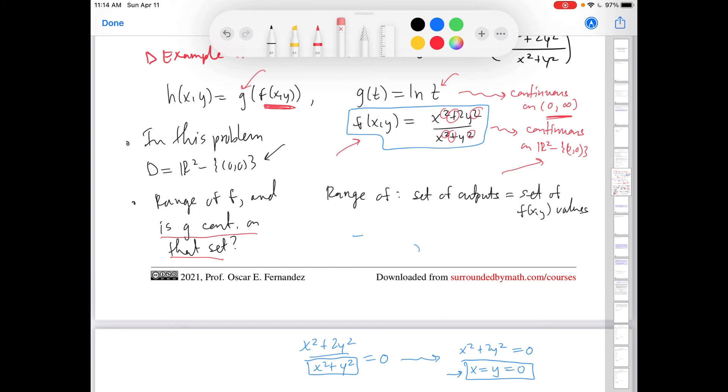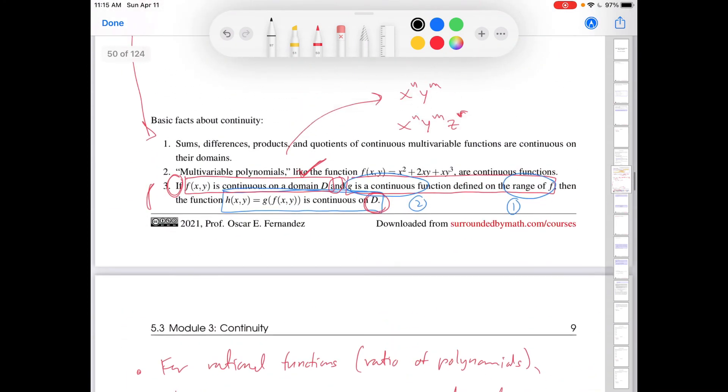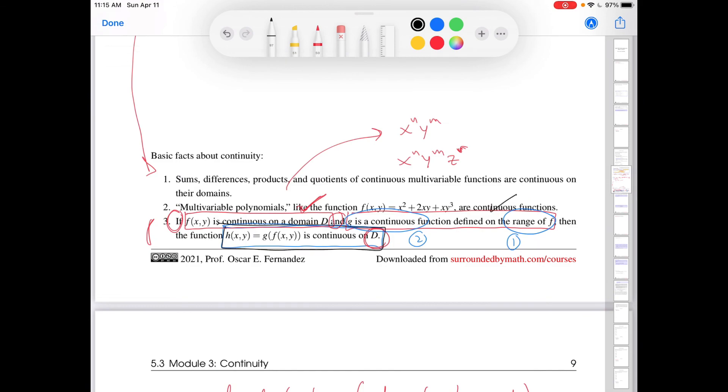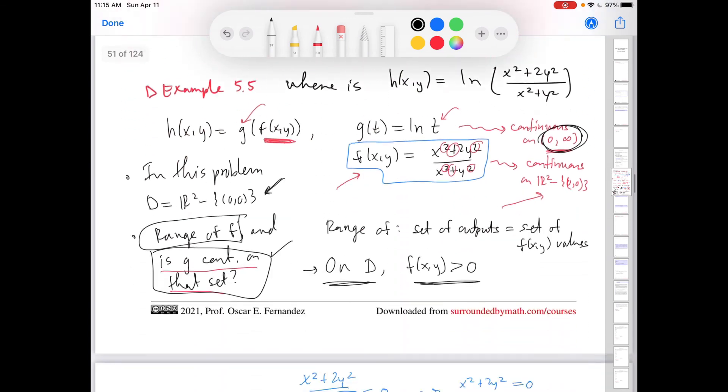So now we come full circle to this realization that, to write this more compactly, on d, f(x,y) is bigger than zero. So in other words, on the domain d, the values that you get when you substitute any x,y in the plane other than the origin into f are positive. And that is great information for this part of the statement for continuity of composite functions because the second part is what matters. g is continuous on all positive numbers. The range of f on d is all positive numbers. So now I can scroll back up, check off the second part, and then I get this conclusion. So I can conclude that the composite function is continuous on d.